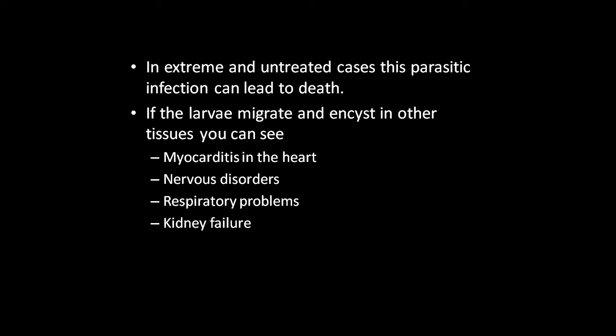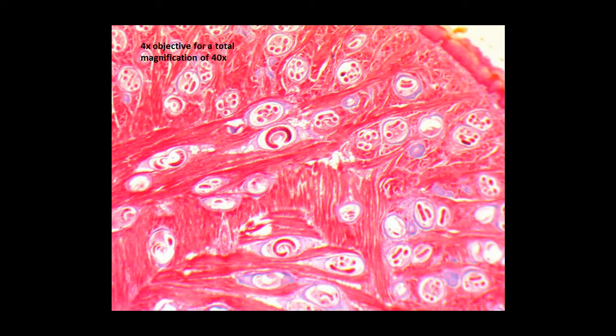If the larvae migrate and encyst in other tissues, you can see myocarditis in the heart, nervous disorders, respiratory problems, and kidney failure. Let's look at some slides of Trichinella spiralis and cysts inside of muscle tissue.